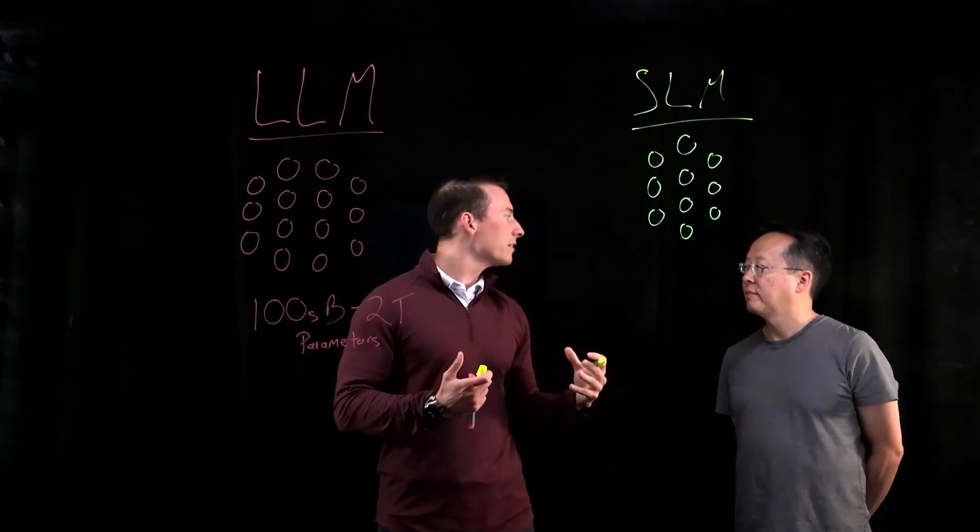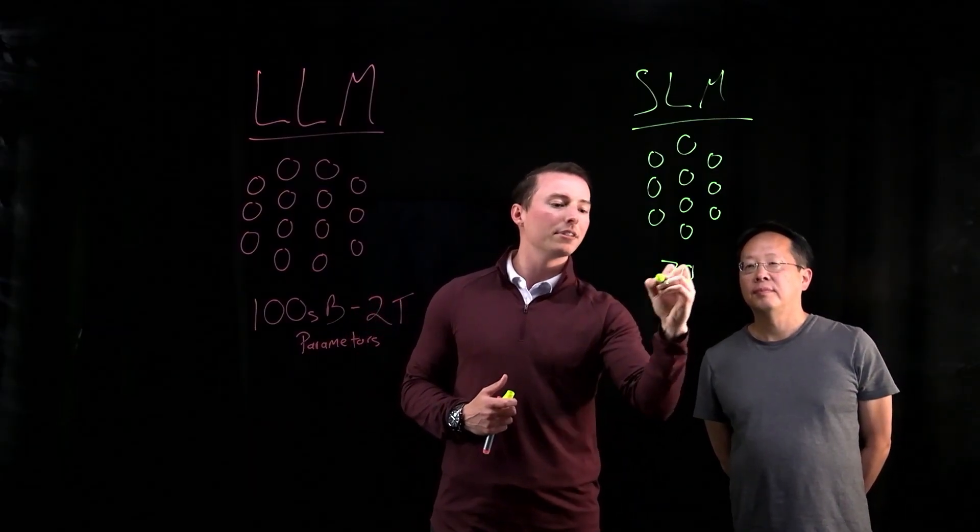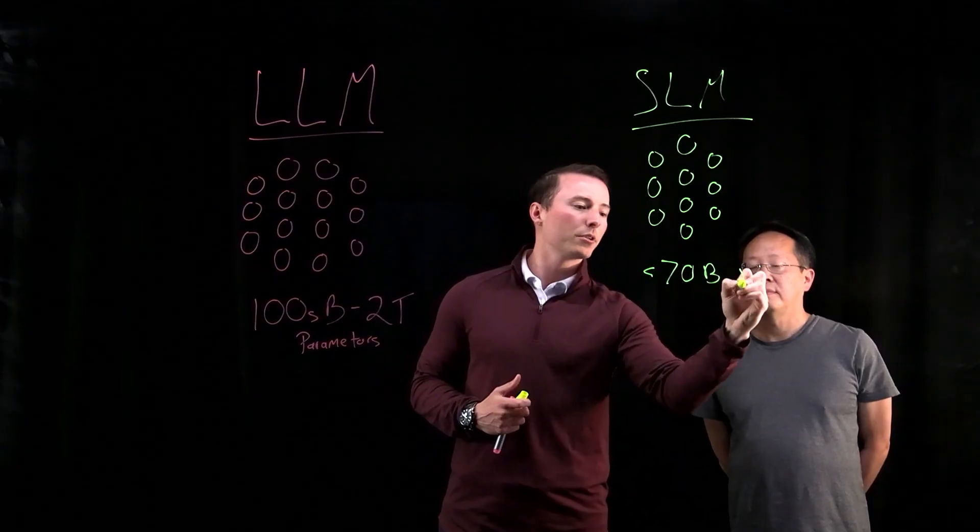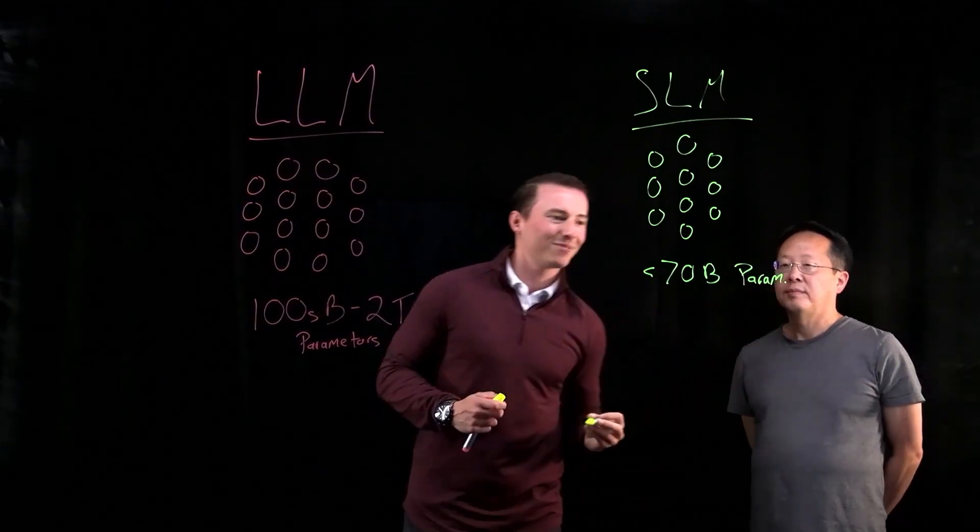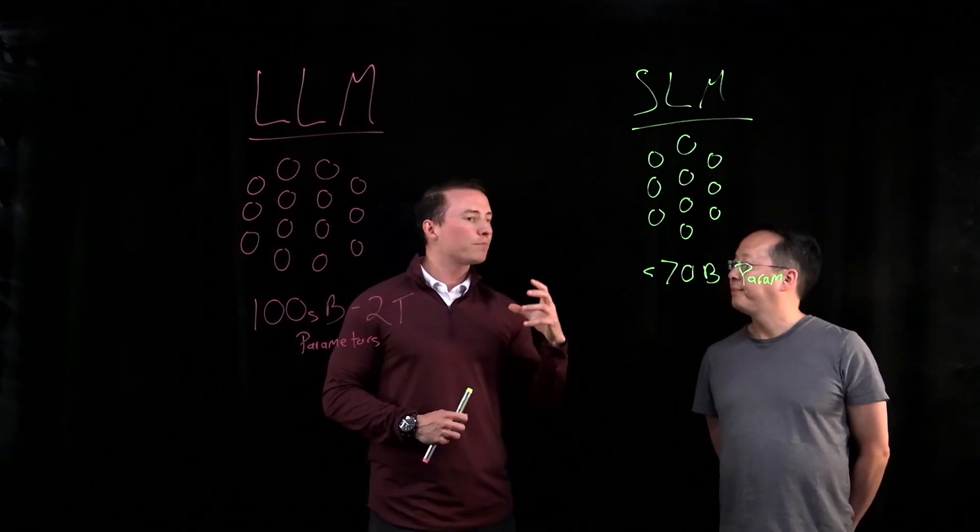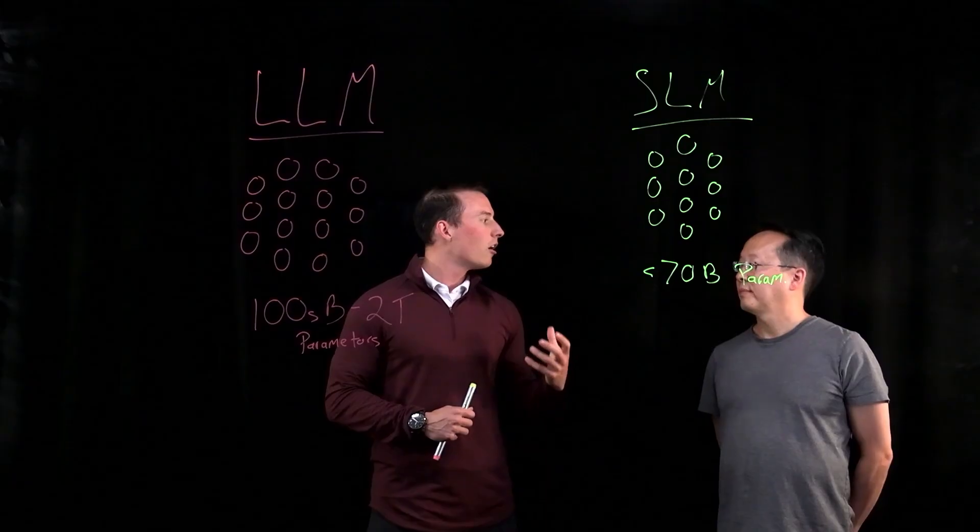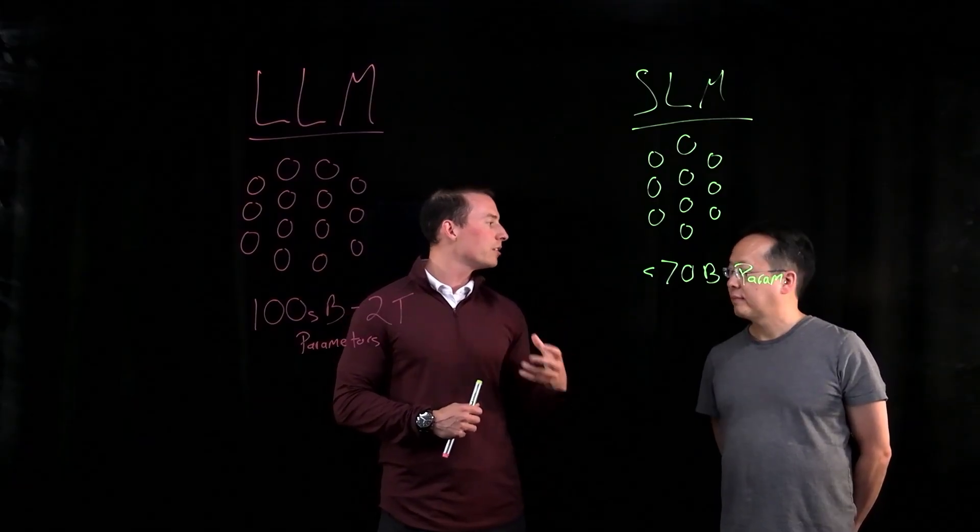At RC, we define a small language model as having less than 70 billion parameters. This number isn't one that we just thought was fun to pull, but instead, it's actually the parameter size that we found can be run efficiently on a single GPU instance.